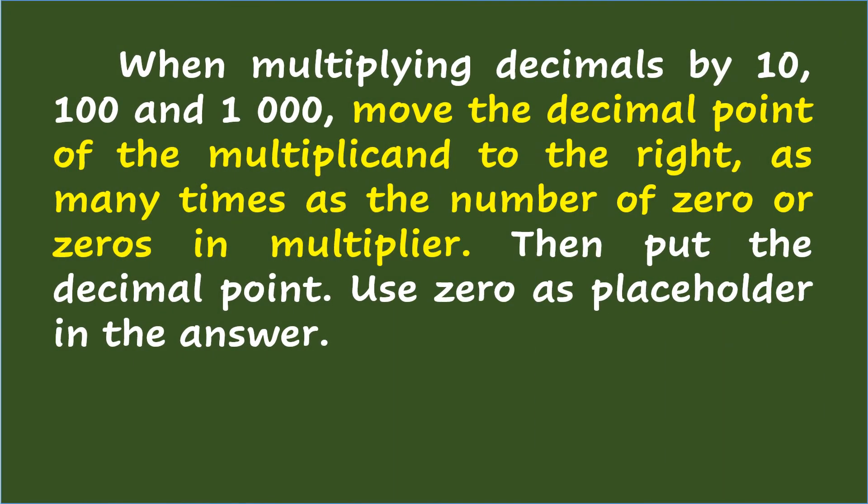When multiplying decimals by 10, 100, and 1,000, move the decimal point of the multiplicand to the right as many times as the number of zeros in the multiplier. Then put the decimal point and use zero as a placeholder in the answer.